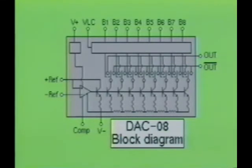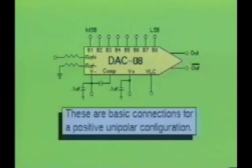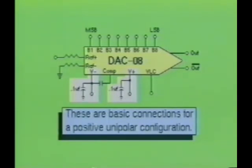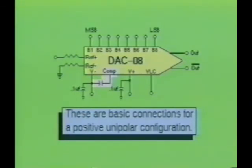The DAC-08 device can operate at frequencies up to 1 MHz and requires a DC power supply voltage of typically 12 to minus 15 volts. Here you see a basic circuit where the DAC-08 is being operated in a positive unipolar configuration. Notice there are two power supply connections required — one goes to a positive DC supply and the other to a negative DC supply. Each power supply terminal is bypassed to ground through a 0.1 microfarad capacitor. The compensation input is used to form the AC frequency response properties of the circuit. In most TTL applications, the compensation input will be bypassed to the negative DC power supply through a 0.01 microfarad capacitor.